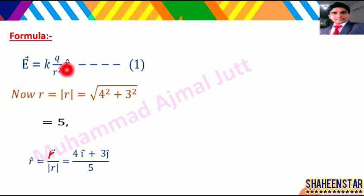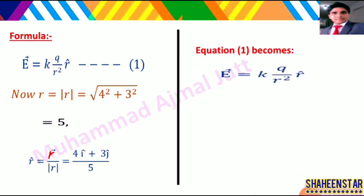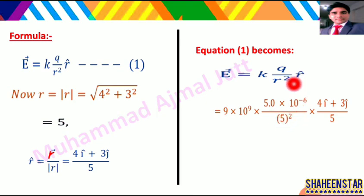R unit vector ki jagah yeh value sari ki sari put karni hai, aur q aur r ki values bhi formula mein put karenge. K ki jagah 9 × 10⁹, q ki jagah given value 5.0 × 10⁻⁶, r ki jagah 5² (kyunki yeh distance hai), aur unit vector ki jagah (4i + 3j)/5. Ab 4i ka alag answer aayega aur 3j ka alag.